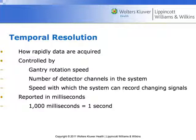Temporal resolution has to do with time — how quickly the pictures were acquired. This is controlled by the gantry rotation speed, the number of detectors or channels in the scanner, and the speed with which the system can change how it records different signals. It's typically reported in milliseconds.